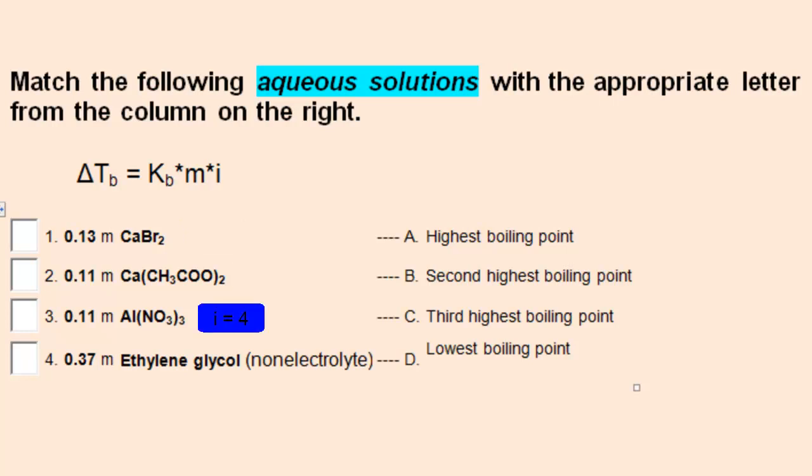The i for the third solution is 4, 3 nitrates and 1 aluminum. And the i for the fourth solution is 1. Because K is identical for all four solutions, we only need to multiply the molality times i to make a relative comparison.